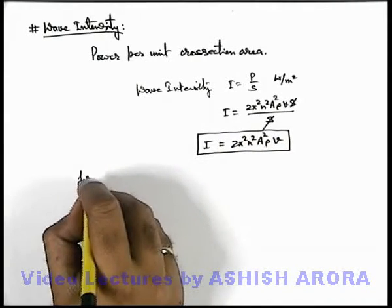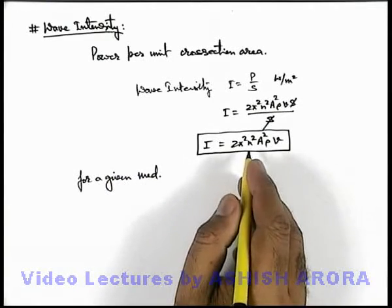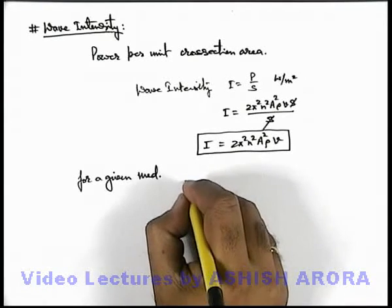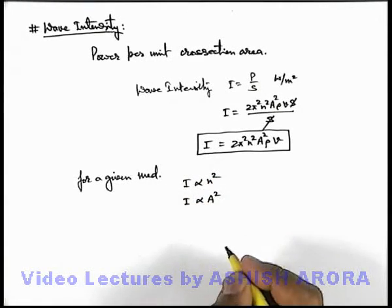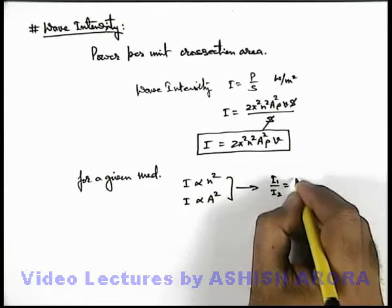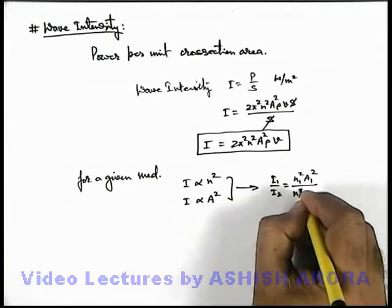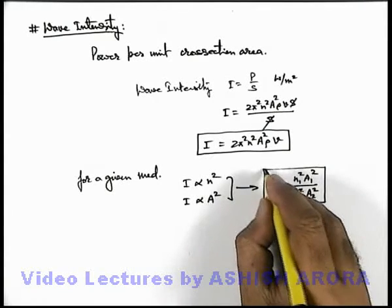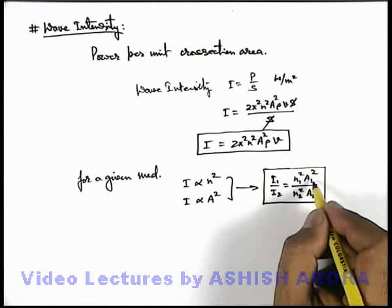For a given medium in which 2 different waves are propagating, the medium density and the wave velocity will remain constant. So intensity is proportional to n squared and intensity is proportional to A squared. Using this, we can write for the 2 waves: I1 by I2 equals n1 squared by n2 squared times A1 squared by A2 squared. This is how we can compare the intensity of 2 waves in a given medium if their frequency and amplitude are known.